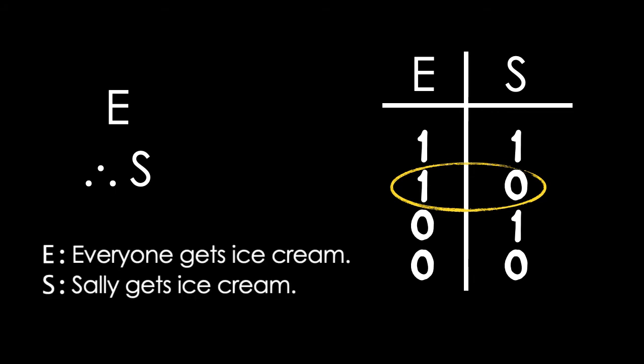Look closer at the second row, though. Here, E has a value of 1, it's true, and S has a value of 0, it's false. Given what E and S are supposed to mean, that combination really isn't possible. If everyone is getting ice cream, then Sally must be getting ice cream.